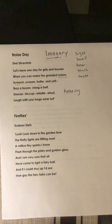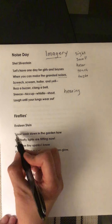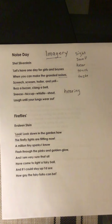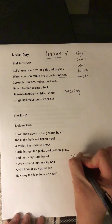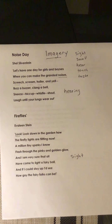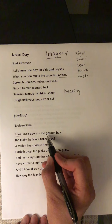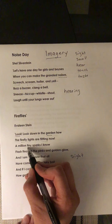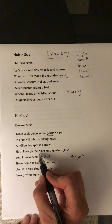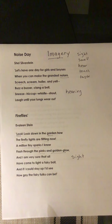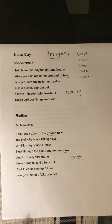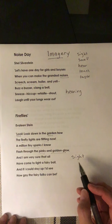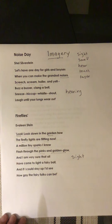Now what sense do you think was being appealed to here? It's your sense of sight, your ability to see. I see a garden with fireflies — they're flitting or flying about, a million tiny sparks, colors of pinks and a golden glow. Can you see these things in your mind? That's what the poet wants you to do — to be able to see an image or a picture in your mind.